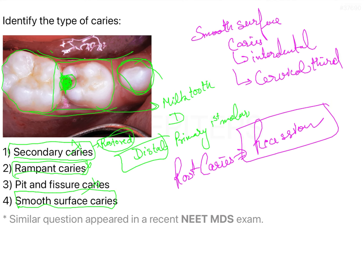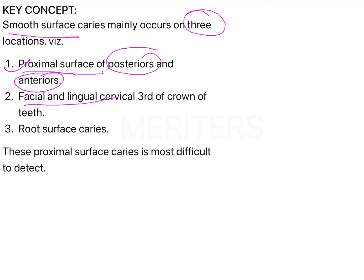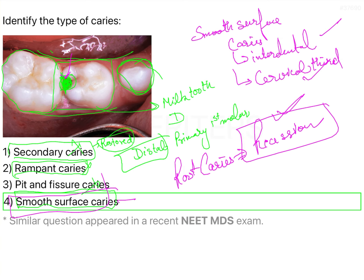So there are five kinds of caries, and this is a very direct question. The proximal caries seen here are smooth surface caries. Smooth surface caries can occur in three locations: the proximal surface of posteriors and anteriors, the facial and lingual surface at the cervical third of the crown, and the root surface. The answer to this question is option number four — smooth surface caries — as depicted in this particular picture.